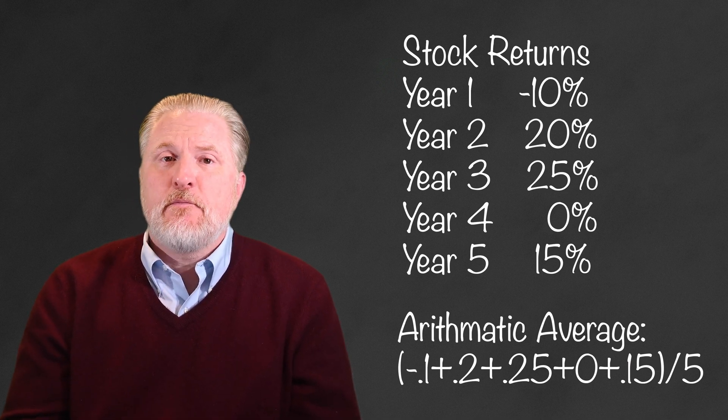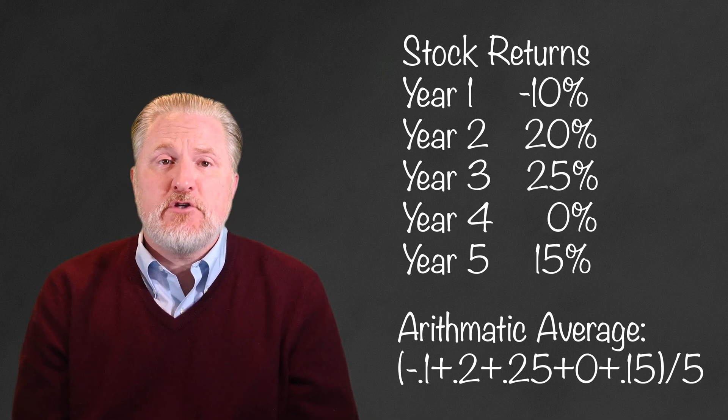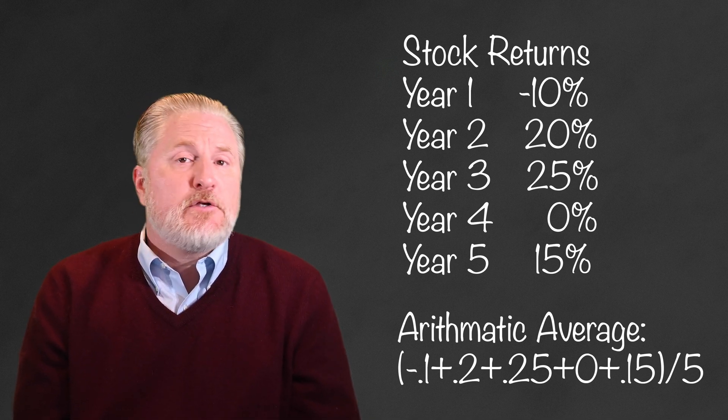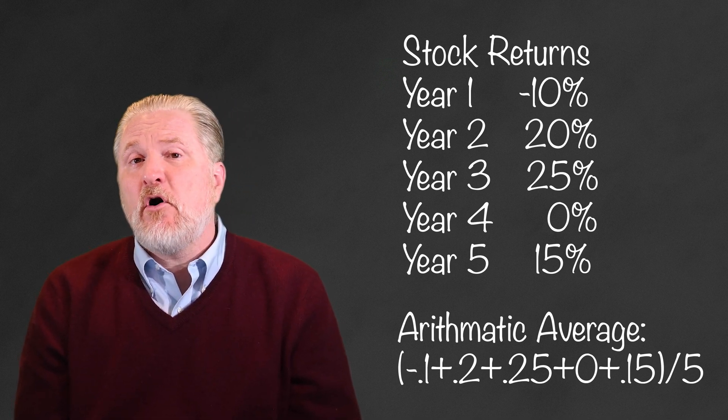In other words, x bar, or the average, is equal to the sum of each of these individual observations: negative 10% plus 20% plus 25% plus 0% plus 15%, all divided by 5, or 10%.